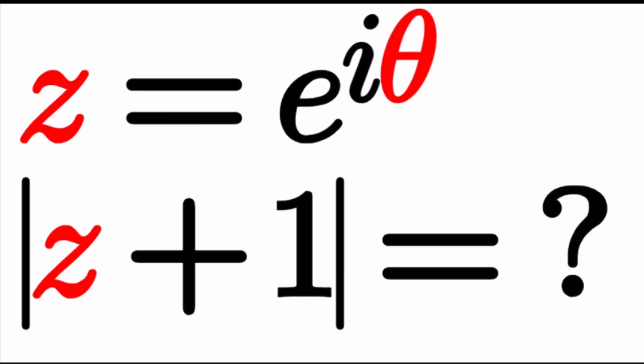All right great. So we're basically going to be finding the absolute value of a complex number z plus one because z is a complex number. But if we were finding the absolute value of z that would be easy right? Because it will be one.